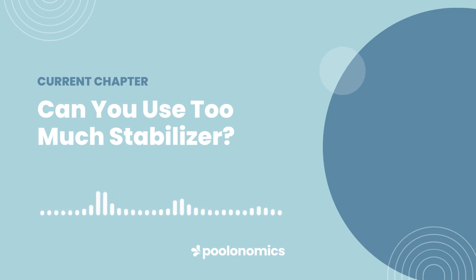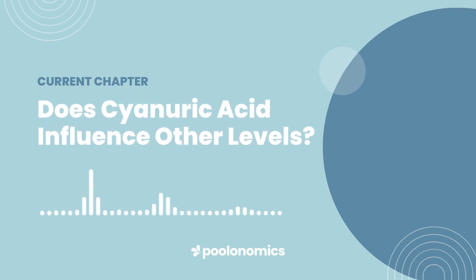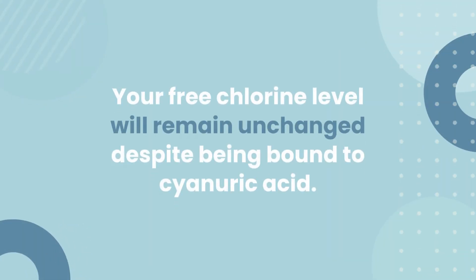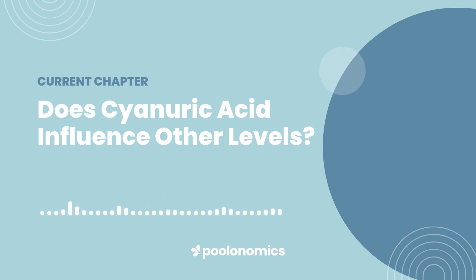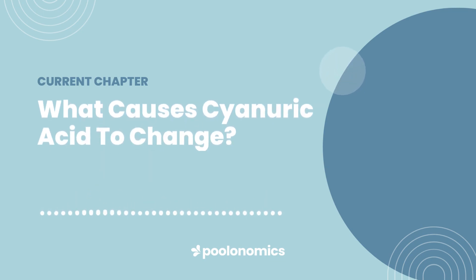In reality, it's just being suppressed by the high concentration of cyanuric acid in your pool. Does cyanuric acid influence other levels? No — chlorine stabiliser only directly impacts chlorine. Even then, your actual free chlorine level will remain unchanged despite being bound to cyanuric acid, because test kits include stabilised chlorine as part of your free chlorine reading. With that being said, since chlorine directly and significantly impacts your water, it's fair to say cyanuric acid still has an indirect influence over the rest of your pool, especially in terms of your overall water quality.